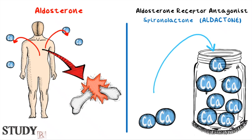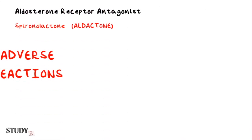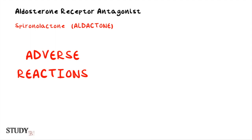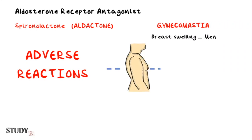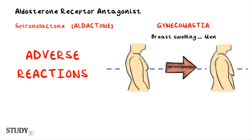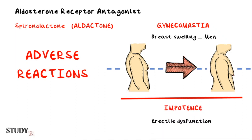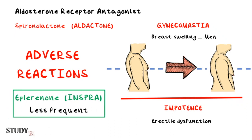For adverse reactions, focus on recalling at least these two from the aldosterone receptor antagonists. For spironolactone: one is gynecomastia, which is swelling of the breast tissue in boys or men due to a hormone imbalance — this occurs because spironolactone interacts with androgen and progesterone receptors. Two is impotence, also known as erectile dysfunction. These adverse effects are less frequent with eplerenone due to its low affinity to those receptors.